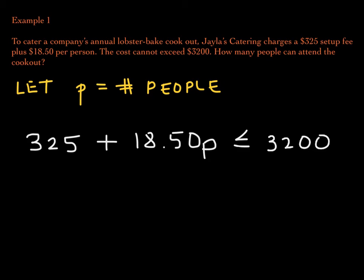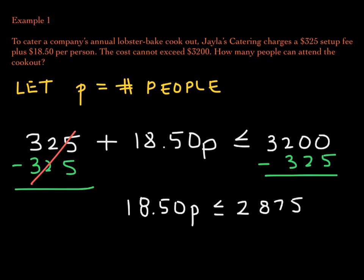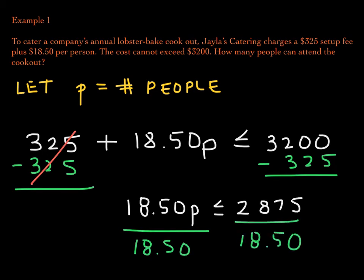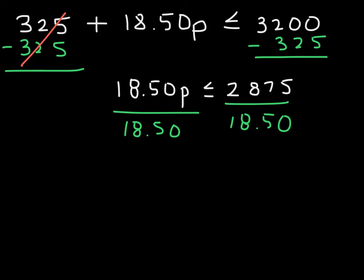Now our job is to solve for P. Let's subtract 325 from both sides. These 325s go away, and you're left with $18.50P is less than or equal to $2,875. Now I'm going to divide both sides by $18.50, and that will isolate my variable P. So now we have P must be less than or equal to...